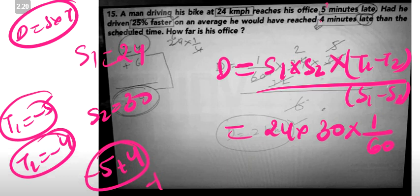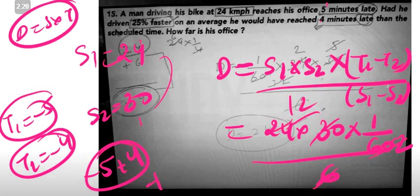The time difference is 1 minute, which is 1 by 60 hours. The difference in speed is 30 minus 24, which is 6. Solving this gives a distance of 2 km. The answer is 2 km.